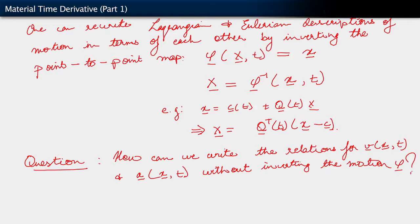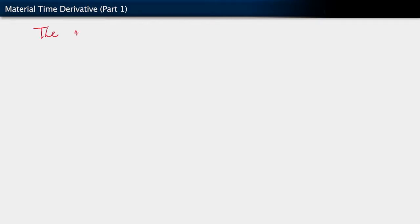Of course we can do this, and the way we do this is fairly straightforward. It is essentially the chain rule. But because of its use in describing quantities that involve time derivatives, it also gives rise to a new, more detailed notion of time derivatives — specifically, something called the material time derivative.